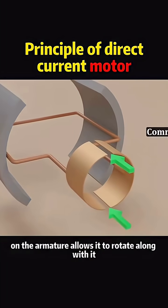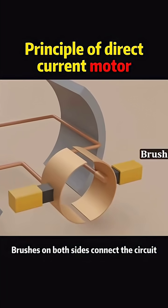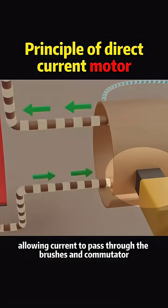Adding a commutator with symmetrical gaps on the armature allows it to rotate along with it. Brushes on both sides connect the circuit, allowing current to pass through the brushes and commutator.